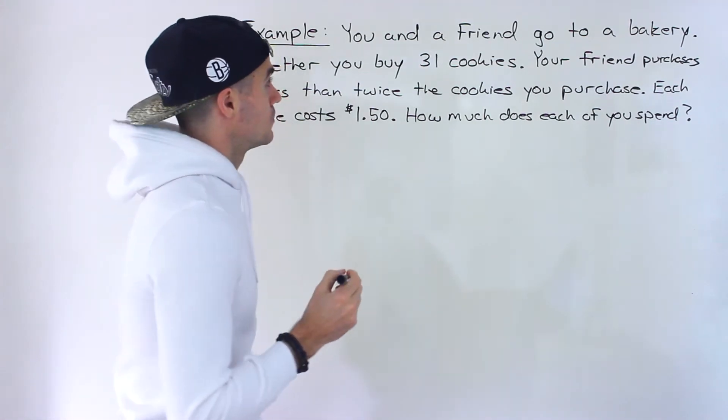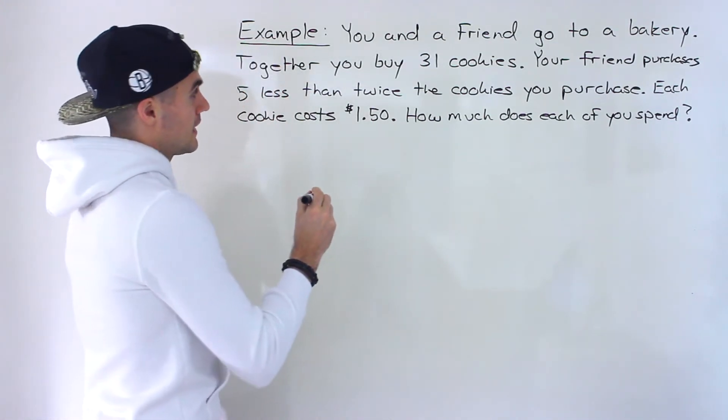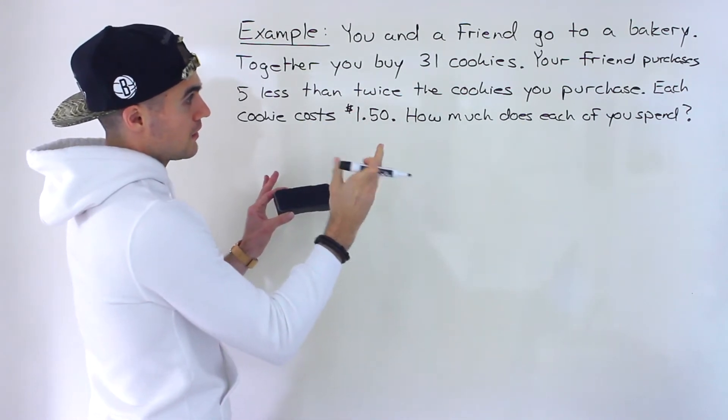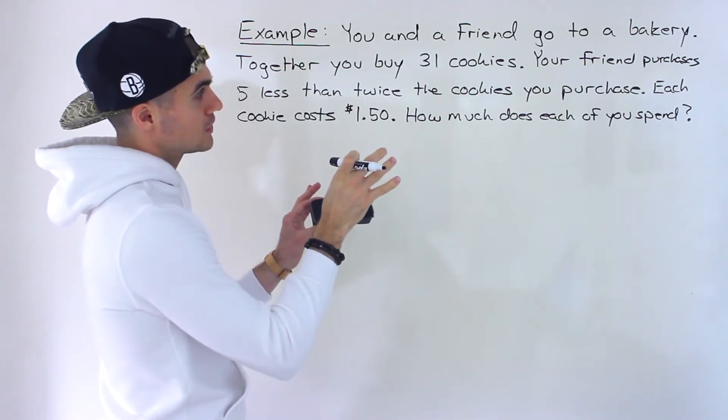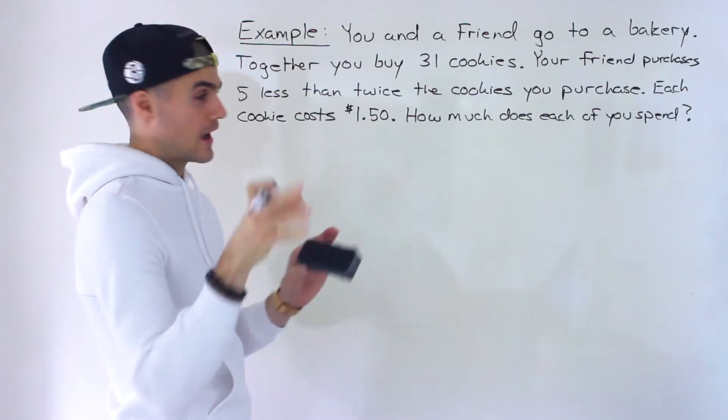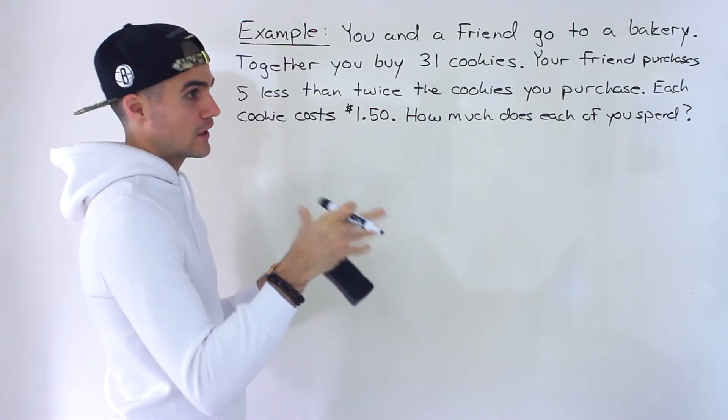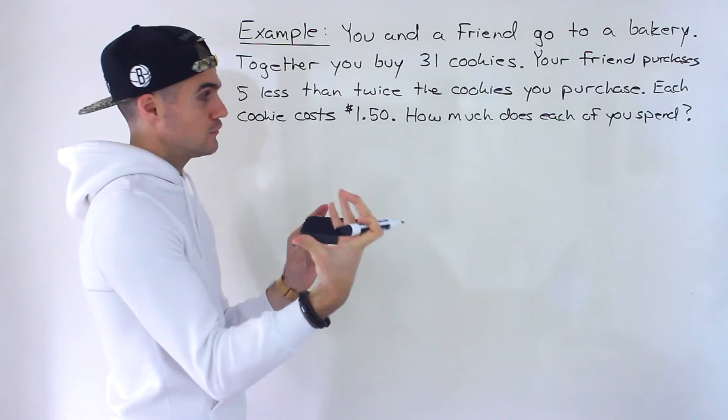Okay, so what we're going to do here is we're told that the total amount of cookies bought is 31, but we don't know how many cookies you buy and how much your friend buys. So that's what we have to figure out first, the amount of cookies.